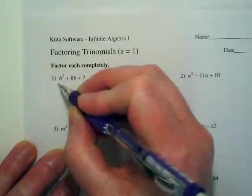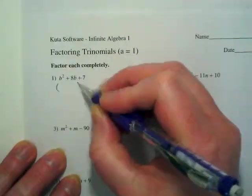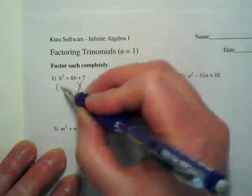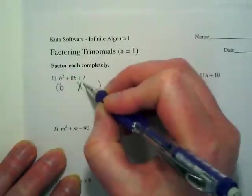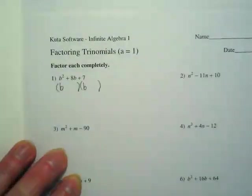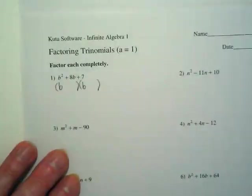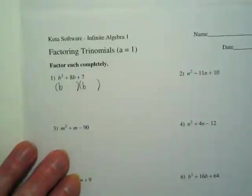So first step, make your parentheses and put the variable in. And for this, the variable is B. I don't like using B. Mine always look like sixes when I do them too fast.